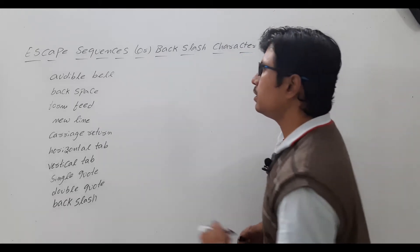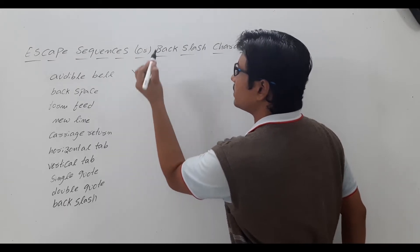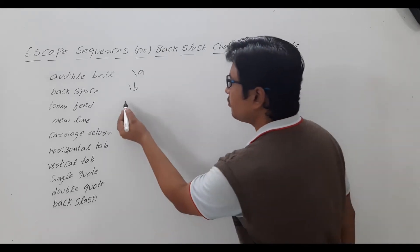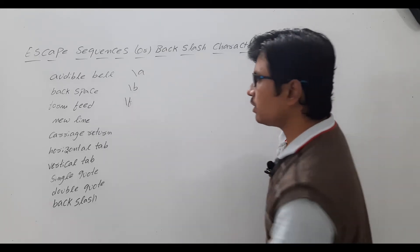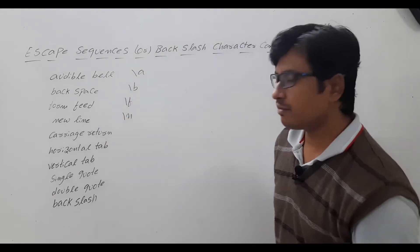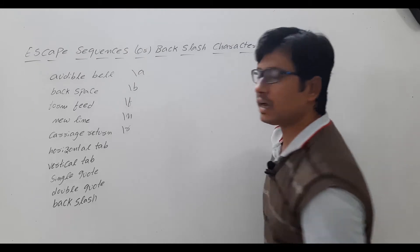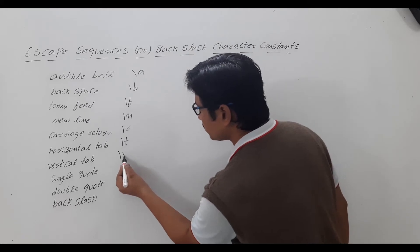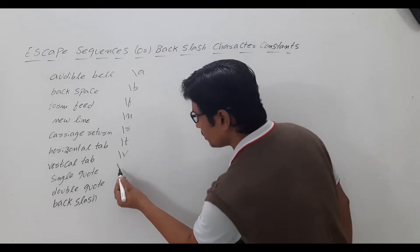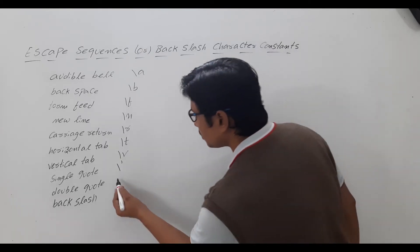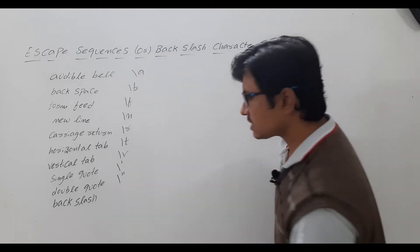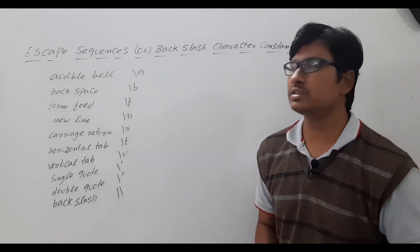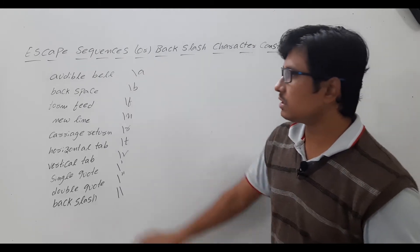For the audible bell, you will use backslash A. For backspace, you will use backslash B. For form feed, you will use backslash F. For a new line, you will use backslash N. For carriage return, you will use backslash R. For a horizontal tab, backslash T. For a vertical tab, backslash V. For a single quote, backslash single quote. For a double quote, backslash double quote. For a backslash, you have to write backslash backslash. This is about the constant and the corresponding meaning.